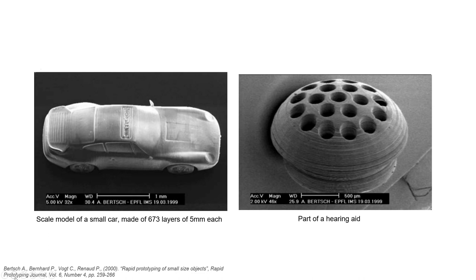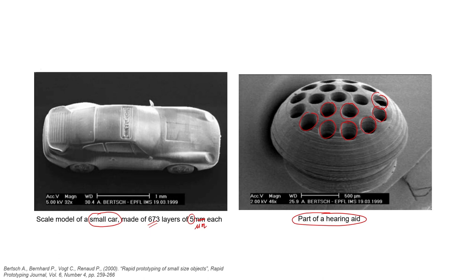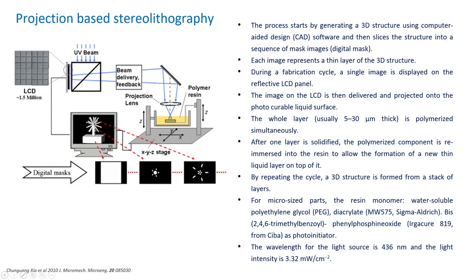The integral process was mainly developed to create micro-level geometries. On screen you can see a very small car made up of 675 layers, each with a layer size of 5 micrometers — with dimensions in millimeters. There is also a hearing aid with small holes through which sound waves pass, developed using this integral-type 3D printing process.